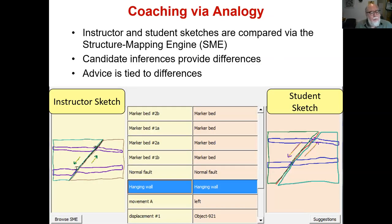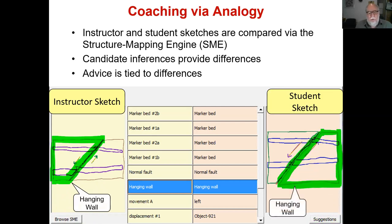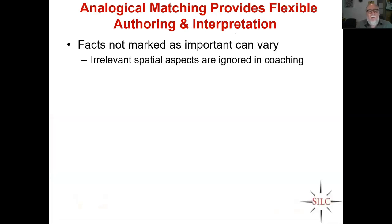Here's an example of coaching from a fault worksheet. You have the instructor sketch on the left, the student sketch on the right. Here's the hanging wall in the instructor sketch; here's the hanging wall in the student sketch. Those differences then provide suggestions — maybe something vague like 'have you considered where the hanging wall is,' or something more targeted, depending on what you want to say.